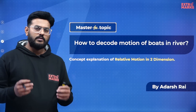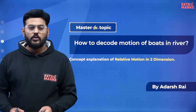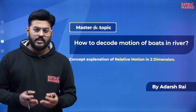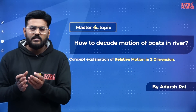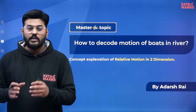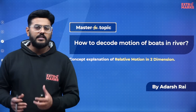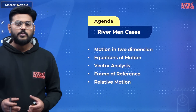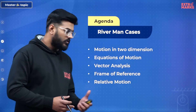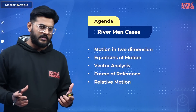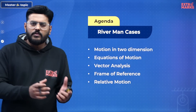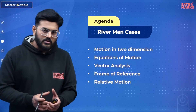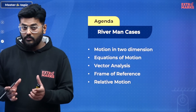Here I am again with a very beautiful question: How do you decode the motion of boats in a river? The question seems pretty simple but there are many cases present in it. This is basically a standard case in learning relative motion — relative motion in 2D. All the concepts regarding it can be understood by analyzing all the possibilities of riverman cases. In this lecture, we will cover motion in 2 dimensions, equations of motion, vector analysis, different frames of reference, and finally, relative motion concepts to understand all the possibilities of the riverman problem.